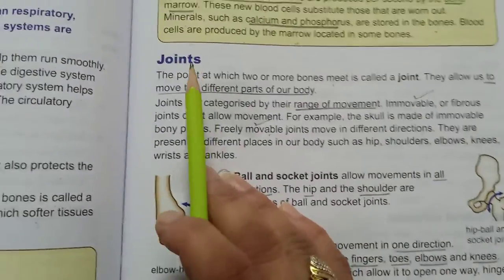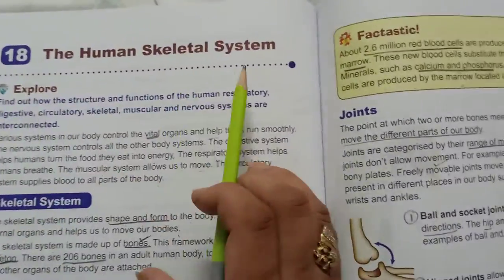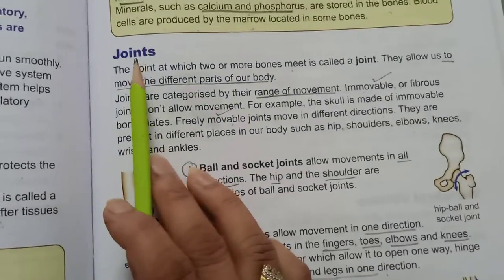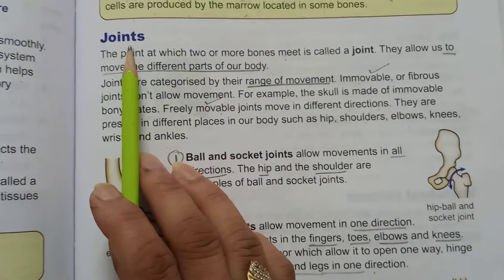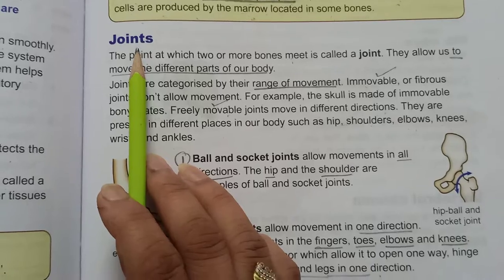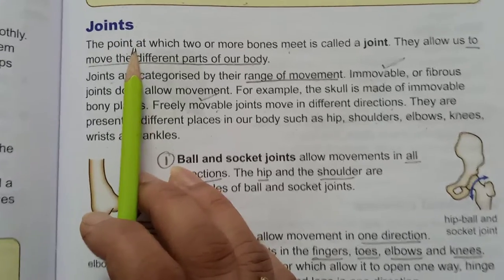Let's continue our chapter on the human skeletal system. The next topic is joints. First we will have a reading and then an explanation.